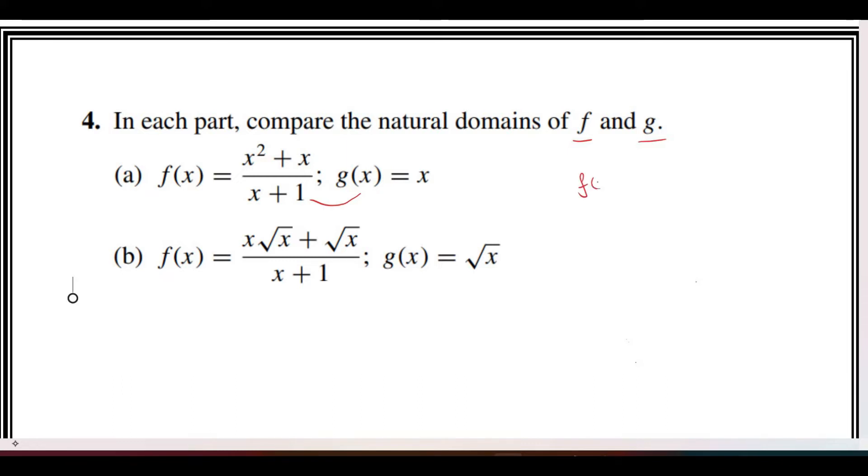What are those operations? If we take x common from the numerator, we are left with x plus 1 in both the numerator and denominator. They cancel out each other, and we are left with x.